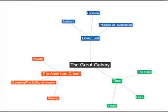This semantic network outlines the divisions, subdivisions, and relationships between themes in The Great Gatsby.